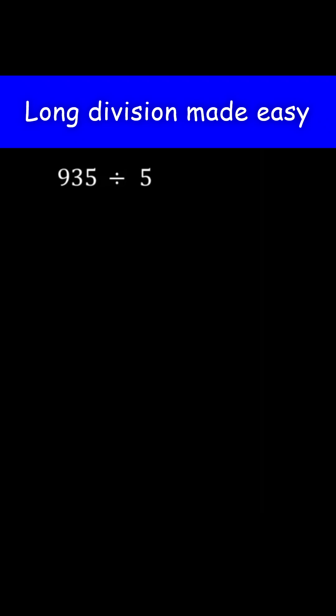Divide 935 by 5. First, set up the problem for long division. 935 is the dividend and we place it inside the division symbol. 5 is the divisor and we place it outside.